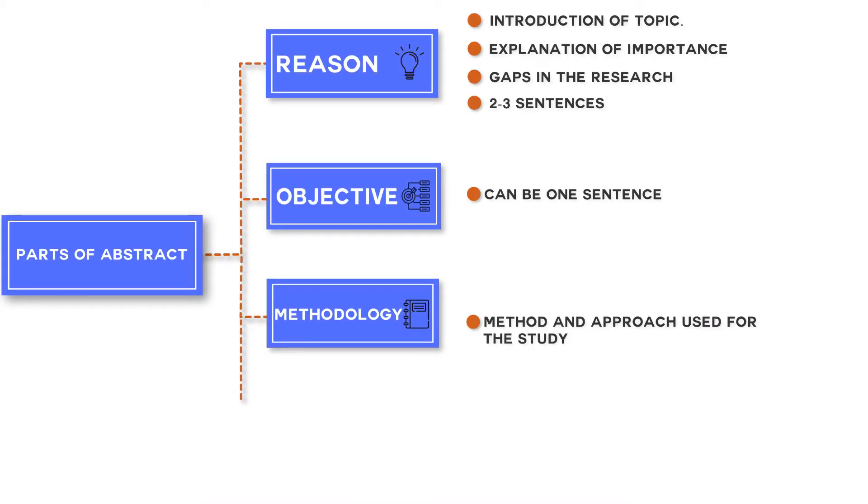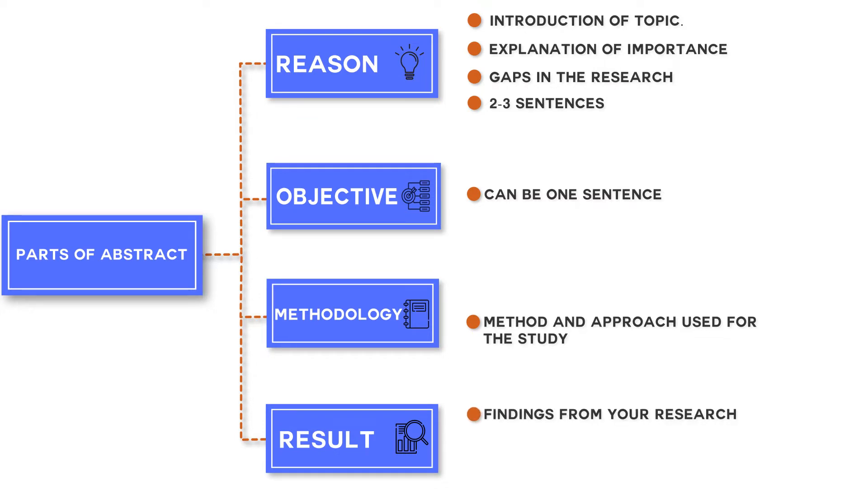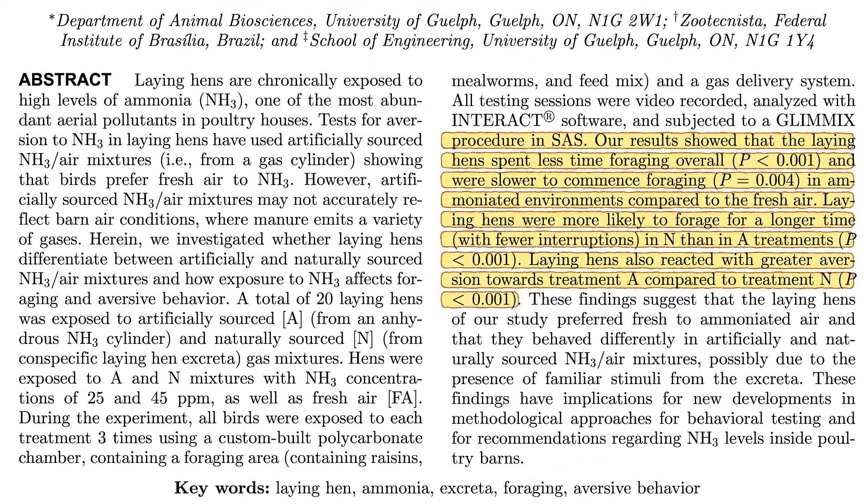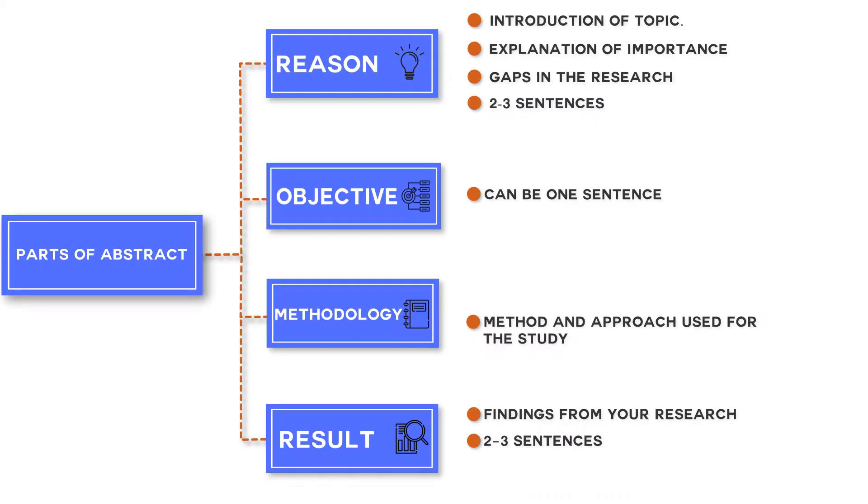Fourth thing you need to include in your abstract is the result. In the results section you need to write findings from your research in not more than three sentences. Many abstracts present their results in one to two sentences. Now let's look at this example. You can see the result here which has two sentences and describes the major findings of the study. The key to writing good results in an abstract is mentioning only those results that are relevant to your research problem.